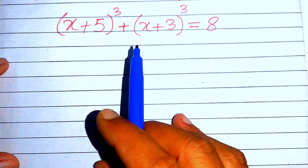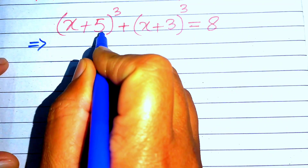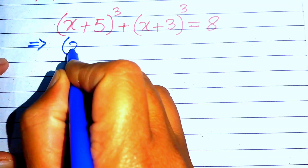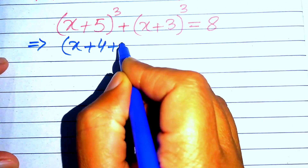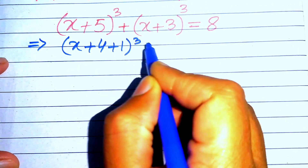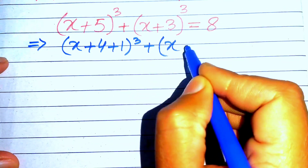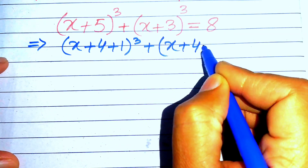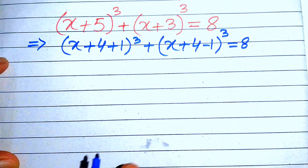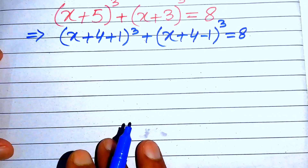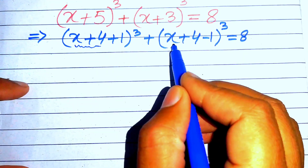The very first step is to rewrite this equation. We write (x+5)³ as (x+4+1)³, and we write (x+3)³ as (x+4−1)³. This whole equation equals 8.